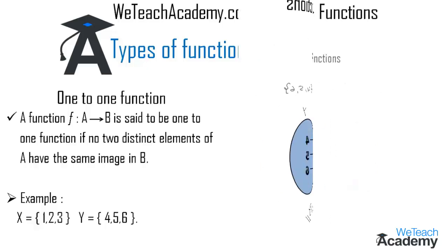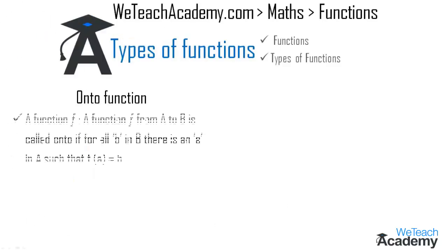Now let us move on to the onto function. A function f from A to B is called onto if for all b in B there is an a in A such that f(a) is equal to b.